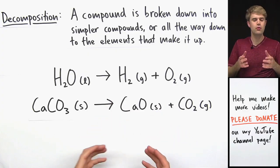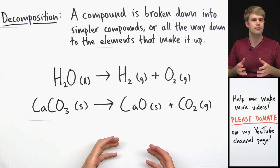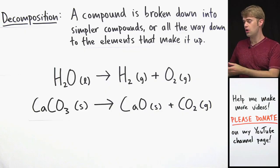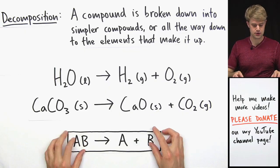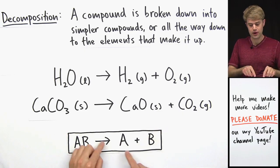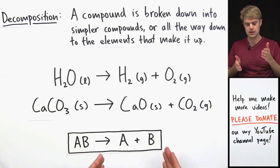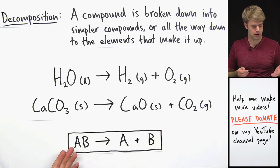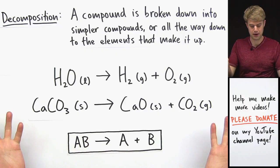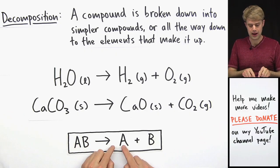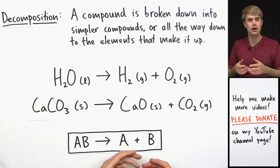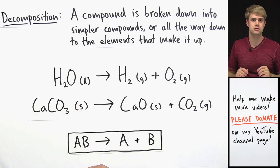If we wanted to come up with a generalized way to write a decomposition reaction, we could write it like this: AB breaking apart into A plus B, where AB is some kind of compound and A and B are simpler compounds or elements.